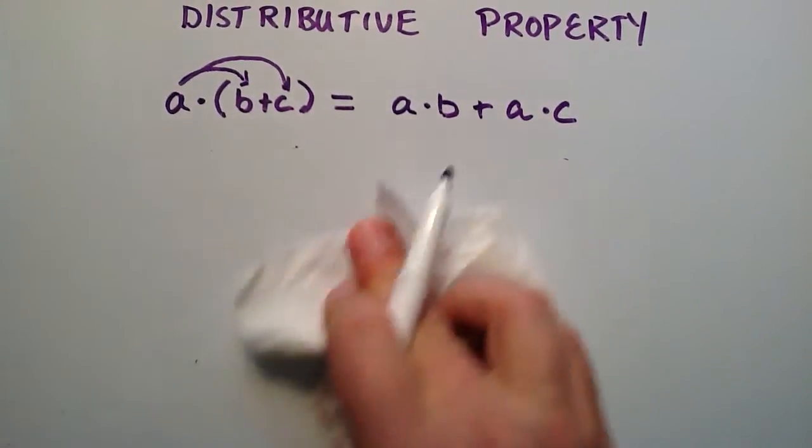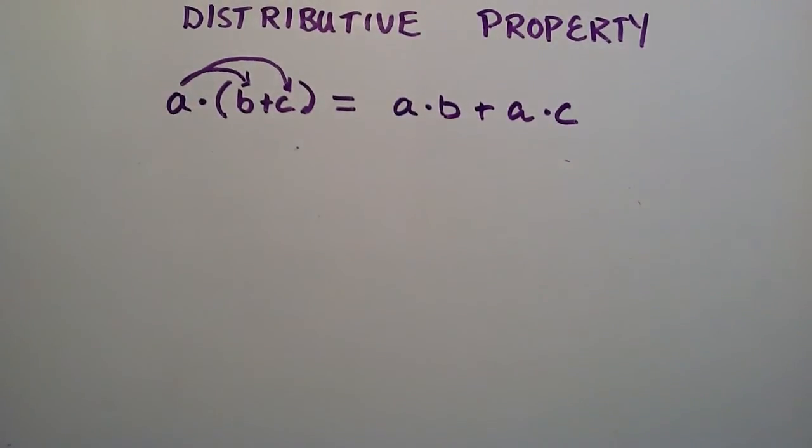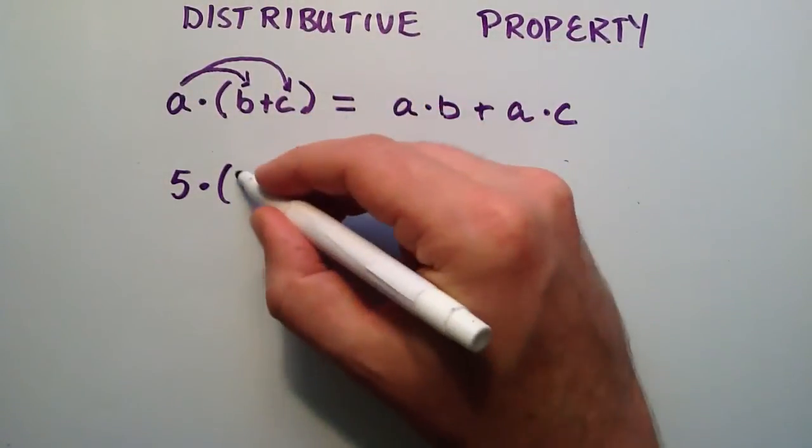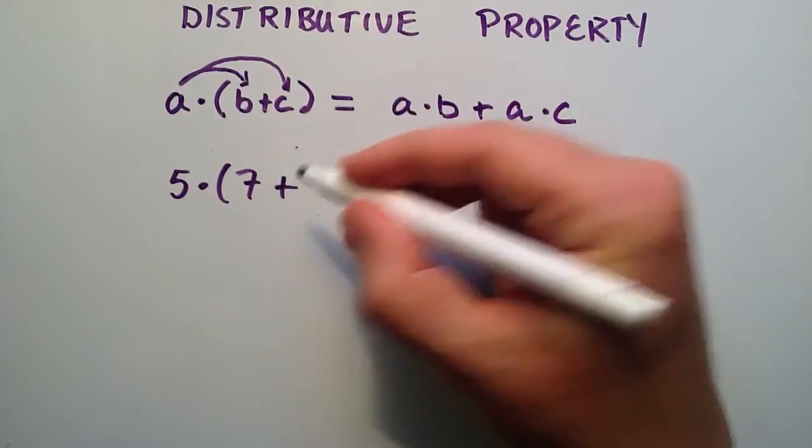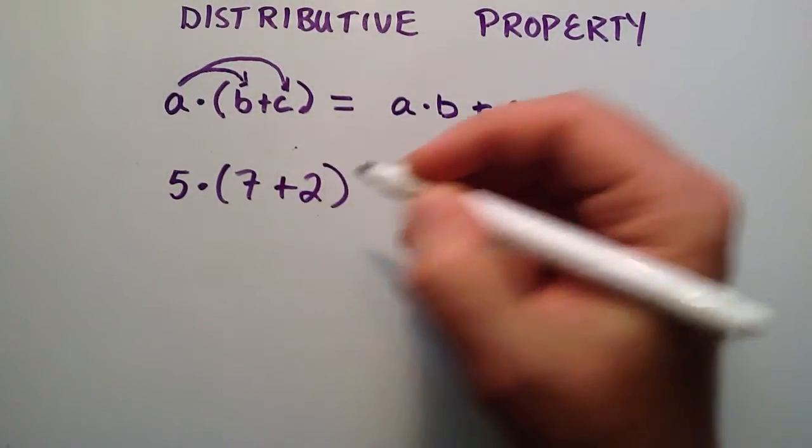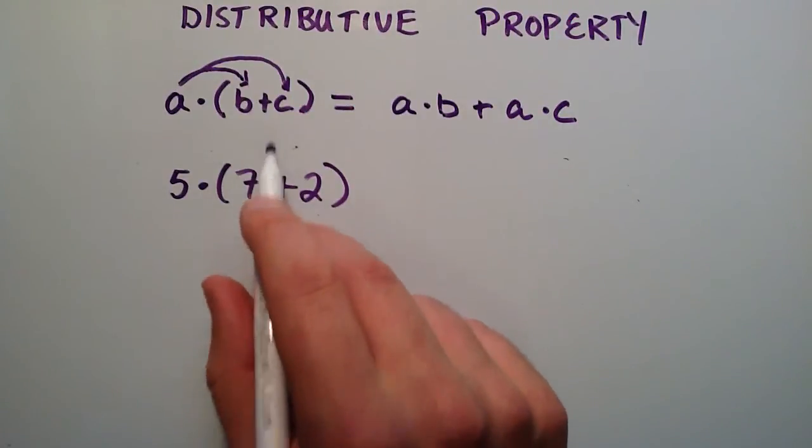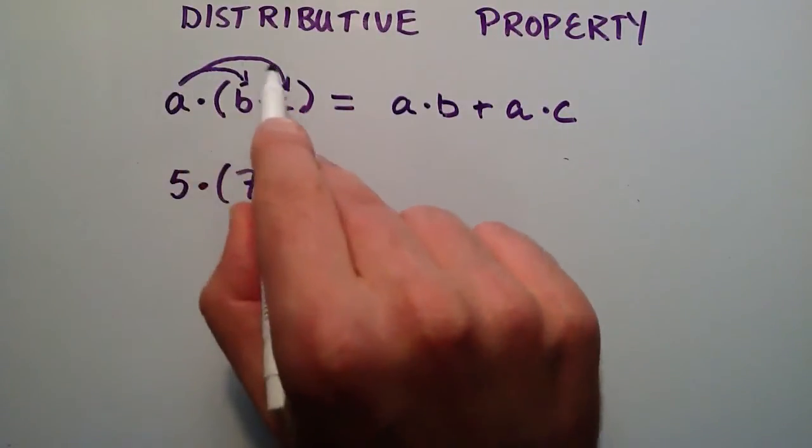We'll practice the distributive property, and let's say that we have 5, and we have 7 plus 2. And instead of doing it the way that I did on the left-hand side the last time, we're going to do this method right here.